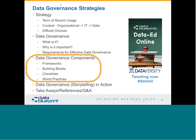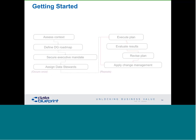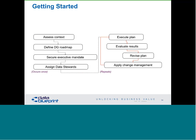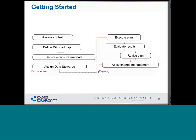In order to get started, you have a standard startup process. The left-hand side is the SSR context — the assessment process. Define a data governance roadmap: not planning out every aspect, but what are we going to do first, maybe second, and possibly third? Secure some executive mandates and make sure they understand it's going to be an evolutionary plan. Assign data stewards to get things started. Execute your plan, evaluate the results, revise the plan, apply change management, and repeat — just like shampooing: lather, rinse, and repeat. Plan to get better at it as you go forward.